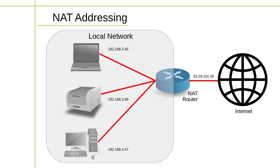When the response from the Internet is received, the NAT gateway translates the public IP address back into the private IP address of the device and sends the response to that device. In this way, NAT enables multiple devices in a private network to share a single public IP address and access to the Internet, while hiding their private IP addresses from the public. NAT also provides a basic level of security while hiding the internal network from the Internet.